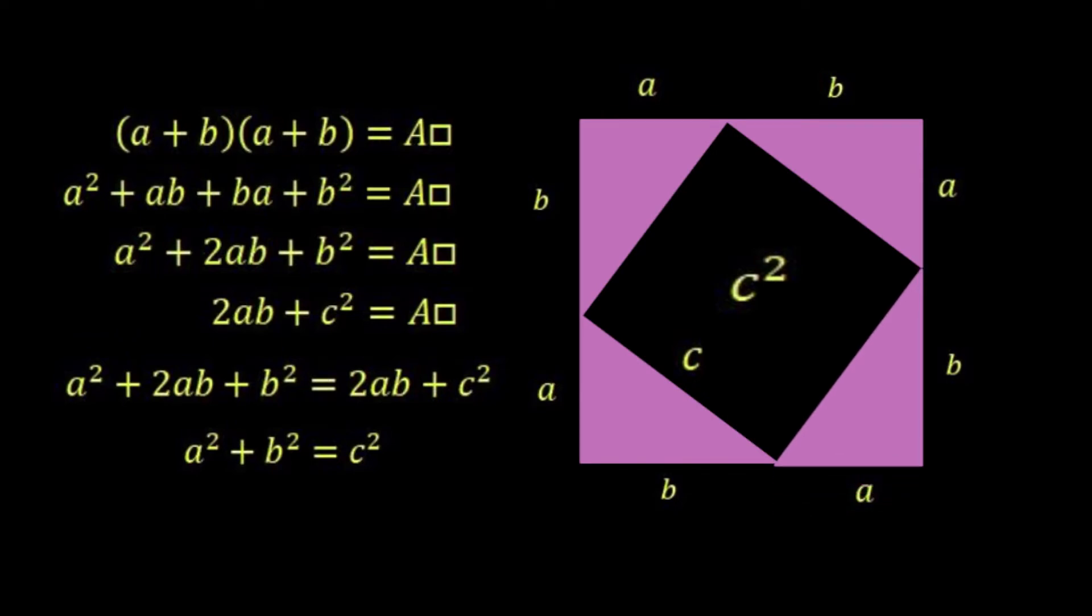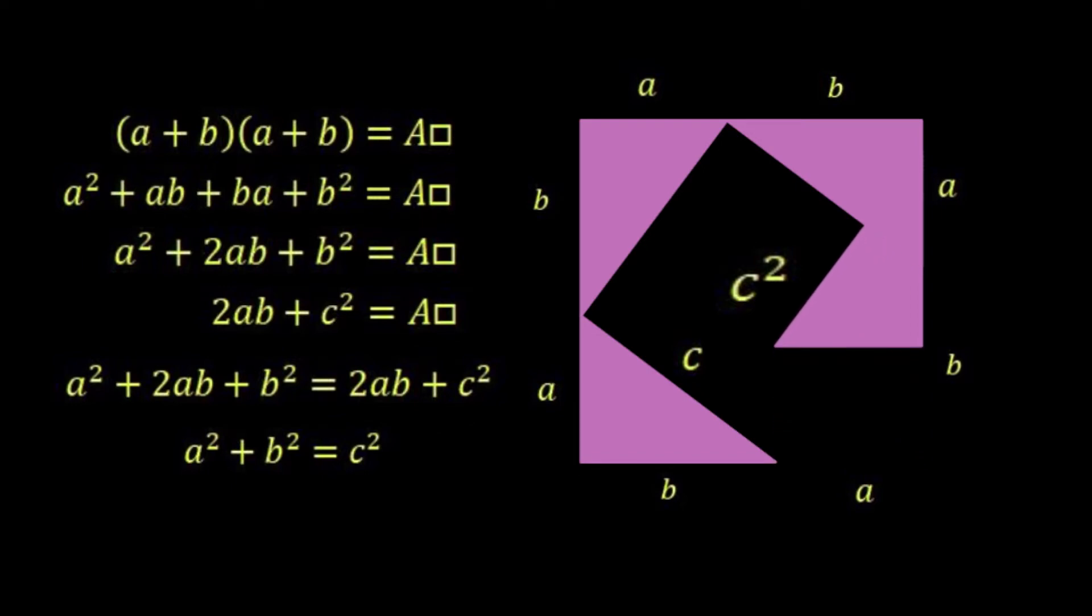Now another thing we can't do is, whenever we move the triangle, we can't move them so that they sit on top of each other. Because if I move this triangle up here, you can see there's an overlap here. So if there's an overlap, this black area here is no longer c². It has increased.